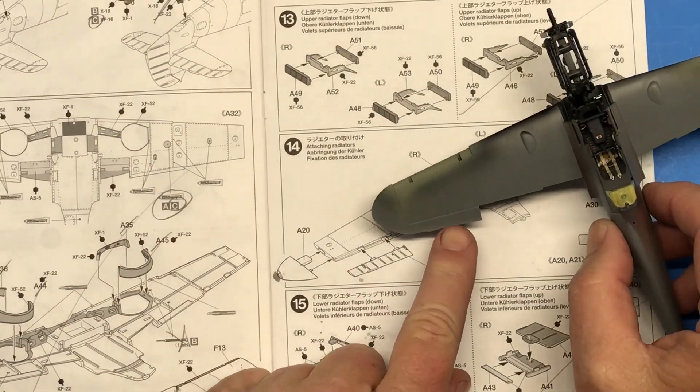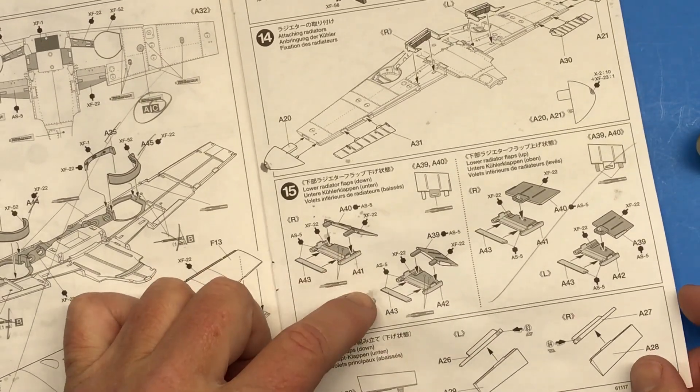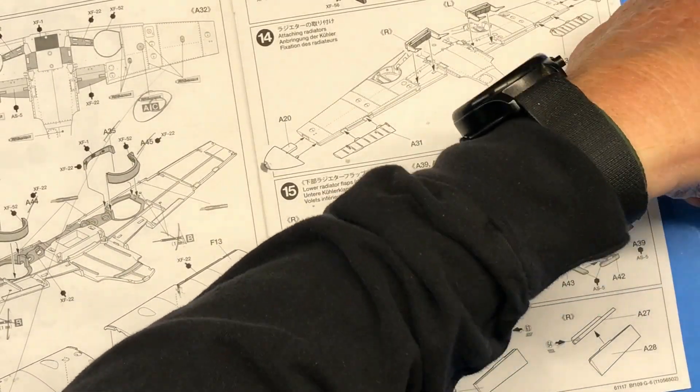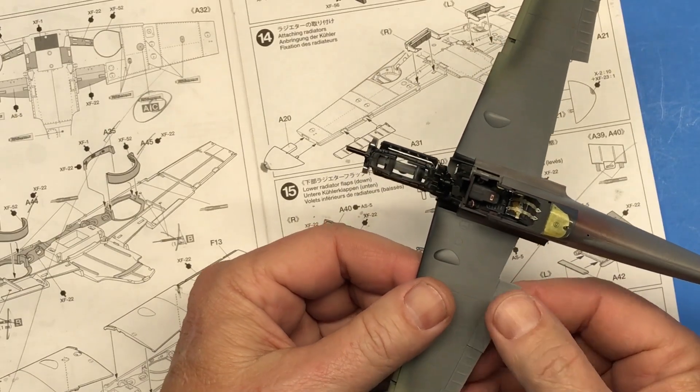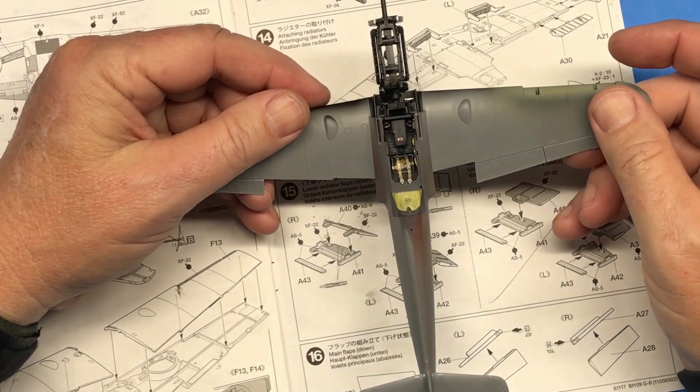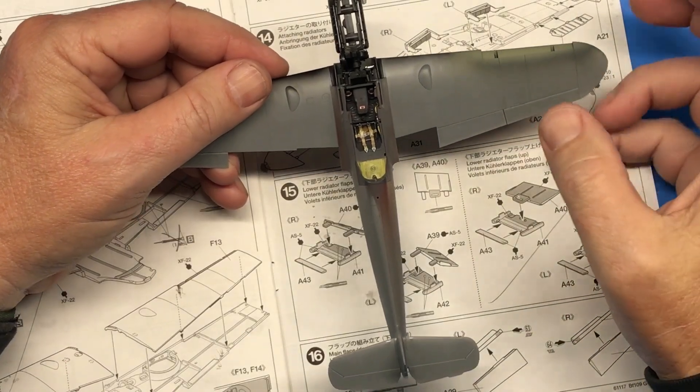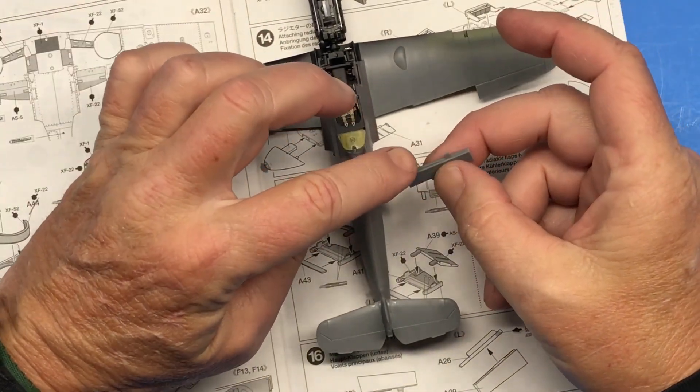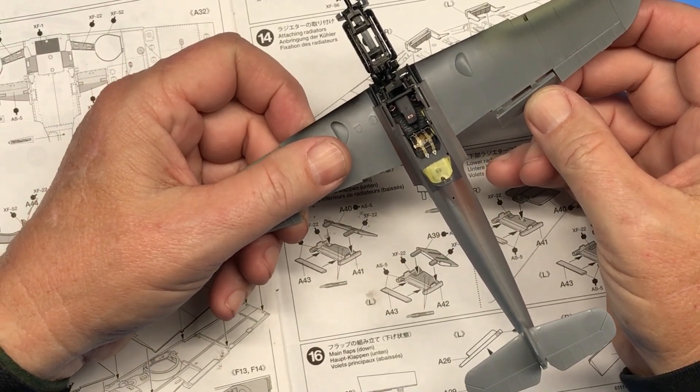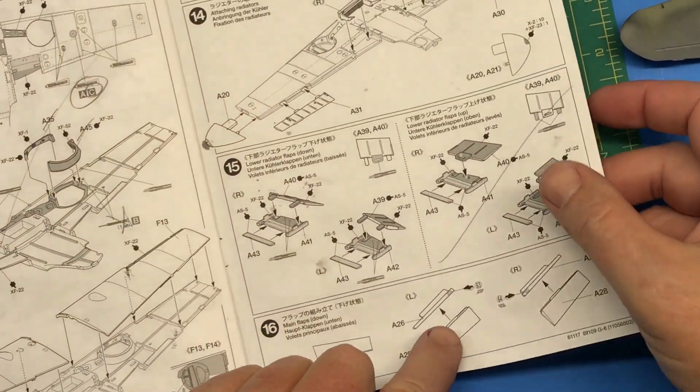I put the wingtips and ailerons in place, got the lower radiator flaps done. The main flaps I have not done anything with because I am going to be installing those temporarily so when I do the Swiss markings with the long stripes and everything it all matches up, and then I'll pull these off, cut the tabs off like the instructions say, and add the angled attachment points so they fit in the down position which is what I want. So those are taken care of but they're not these parts here.